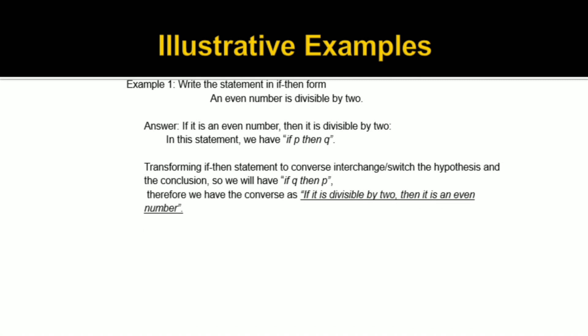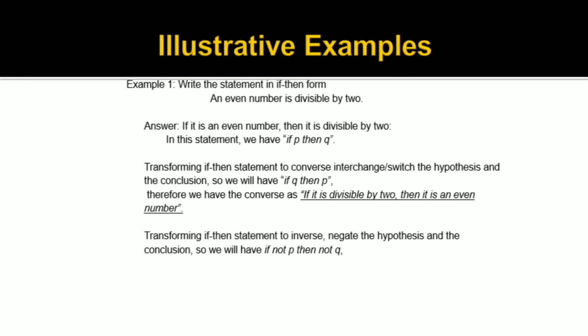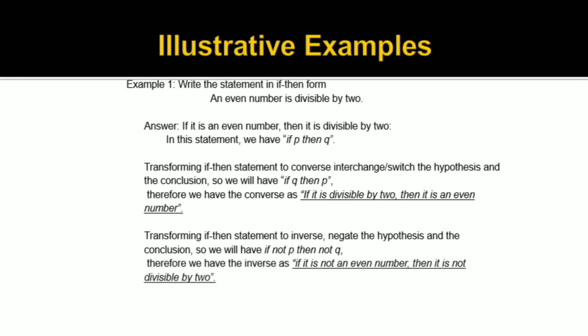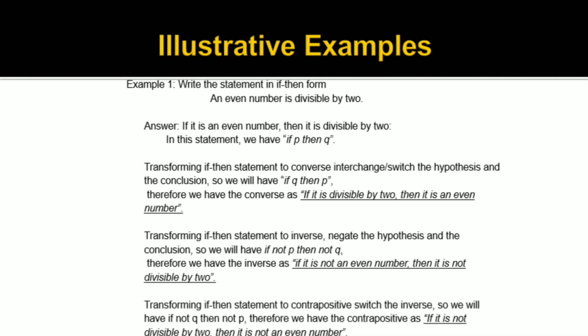Therefore, the converse is: if it is divisible by 2, then it is an even number. Transforming the if-then statement to inverse, we negate the hypothesis and the conclusion, so we will have if not P, then not Q. Transforming to contrapositive, we switch the inverse, giving us if not Q, then not P. Therefore, the contrapositive is: if it is not divisible by 2, then it is not an even number.